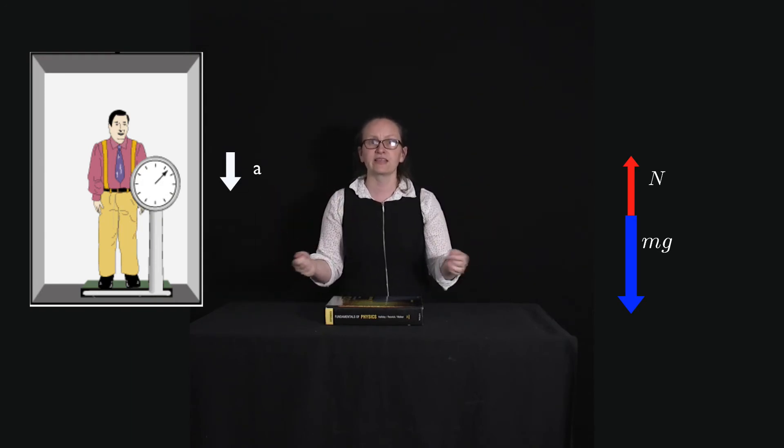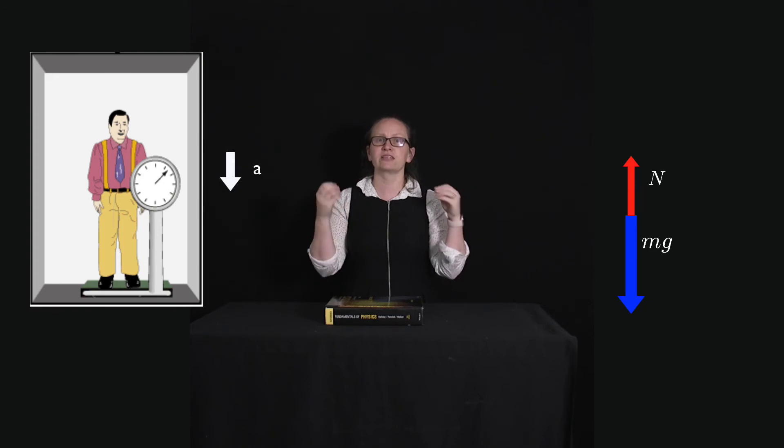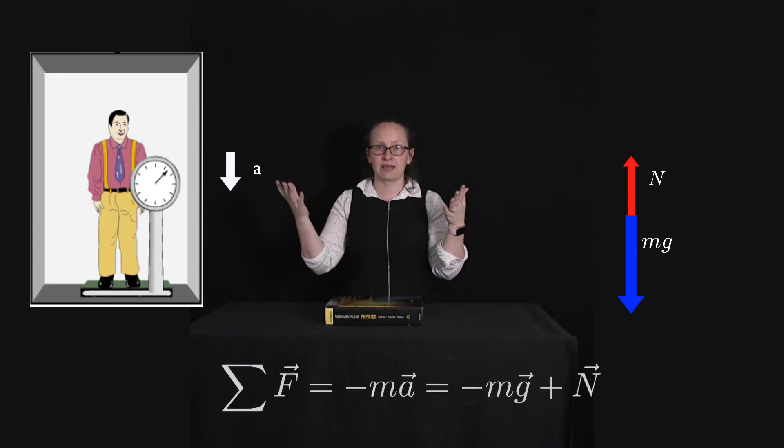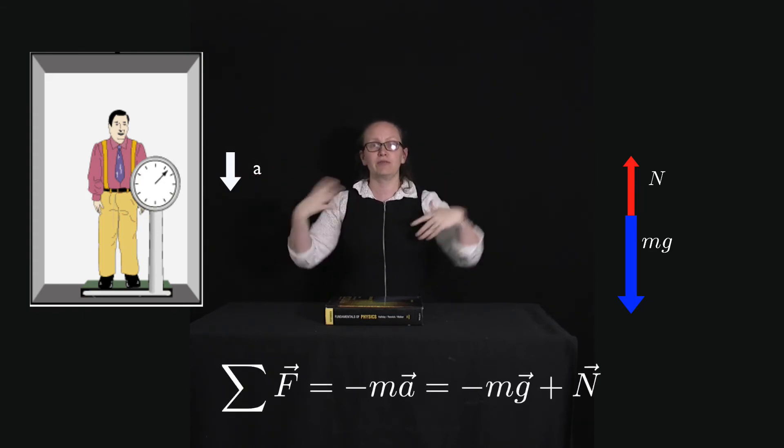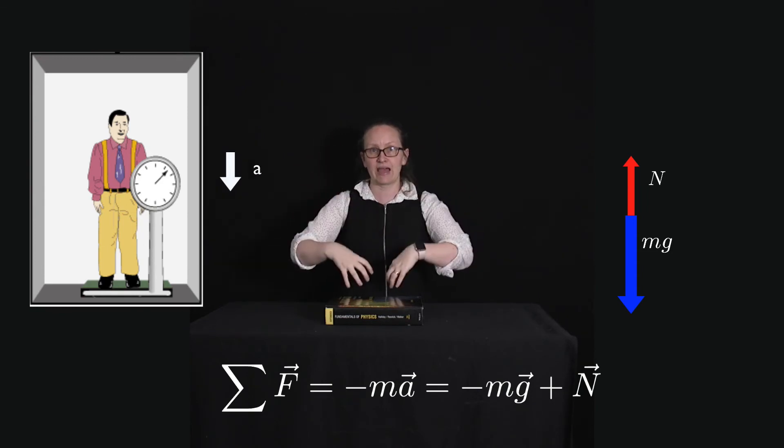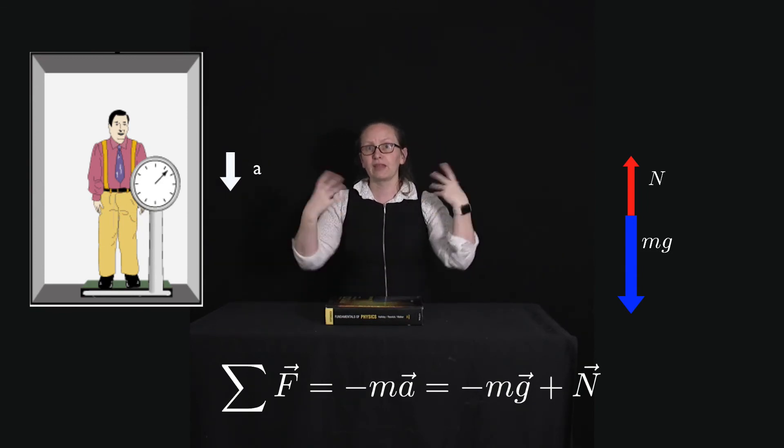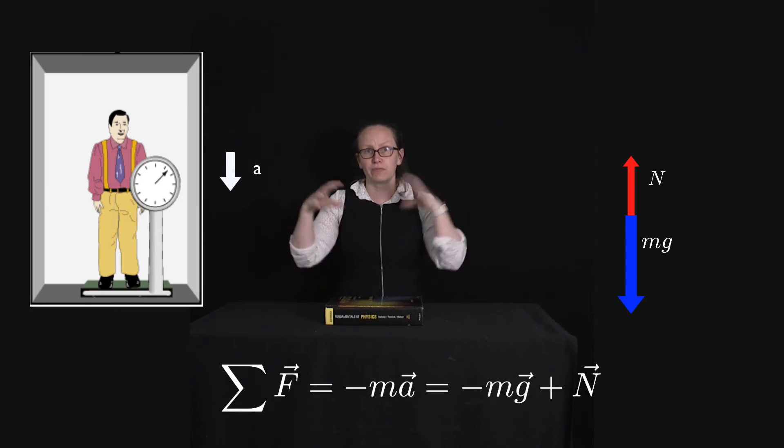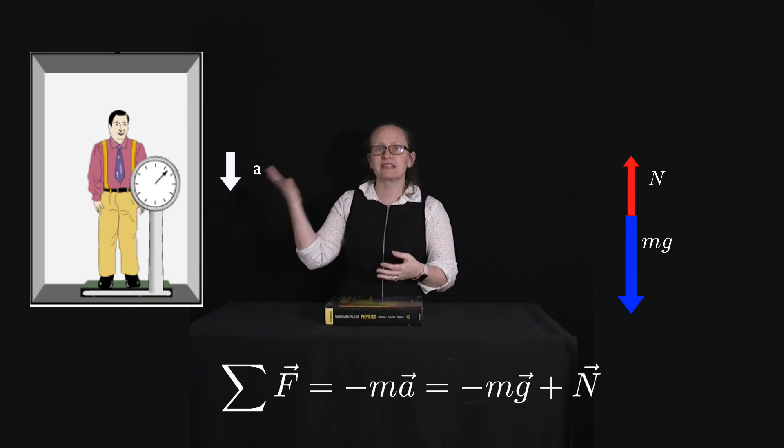In this case the sum of the forces is equal to minus the mass times the acceleration. I'm using minus here because I'm taking downwards as the negative direction. And this is also equal to -mg + N.